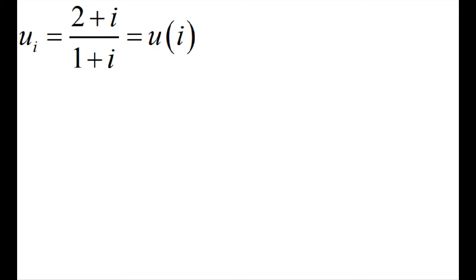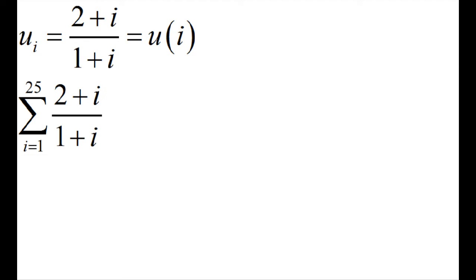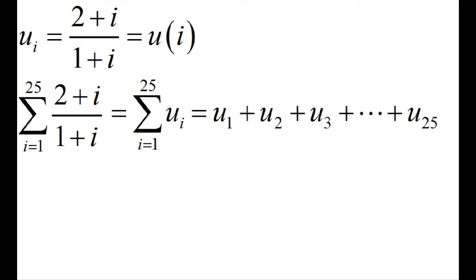One thing you'll see a lot is a shorthand for when a function is inside of a summation. As an example, we have a function u of i, or u sub i, is equal to 2 plus i over 1 plus i. We could write it like this, but that looks a little messy and cluttered, so we'll substitute it by just writing u of i. That way, the sum is just u1 plus u2 plus u3, all the way up to u sub 25. Notice that we use the dot dot dot so we don't have to write every single term.